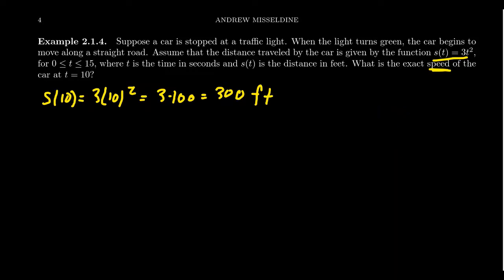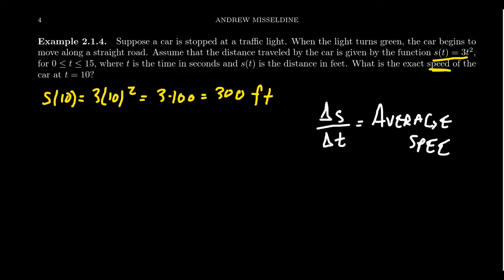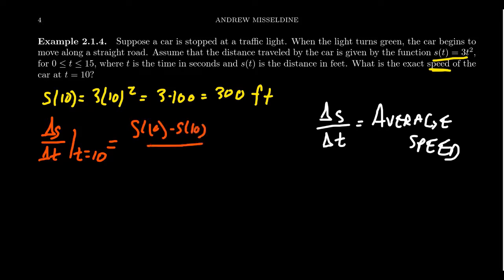If we use the average rate of change of our distance function — delta S divided by delta T — the delta S represents a change of position and delta T represents a change of time. This is the average rate of change of position with respect to time, which is what one would call average speed. The problem is that if we try to compute delta S over delta T at the moment t = 10, we get s(10) minus s(10) over 10 minus 10, which gives 0 over 0. That's not a speed — 0 over 0 is not a number.